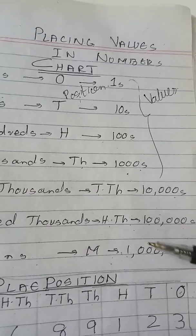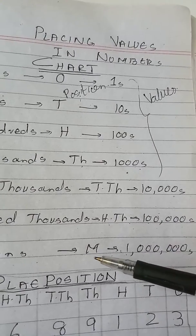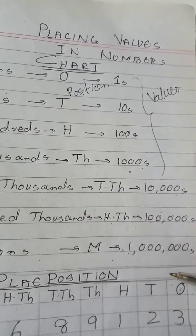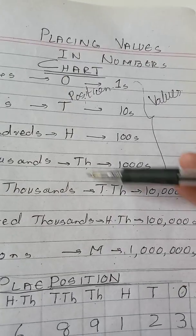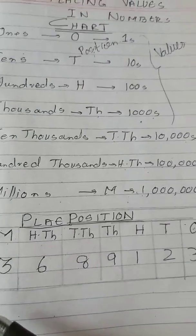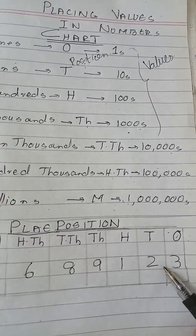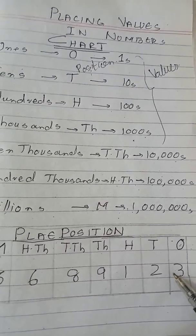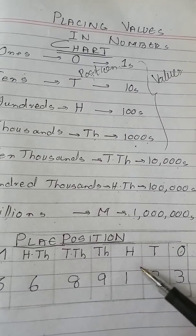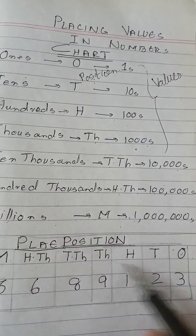So how many zeros do we have in hundred thousand? Five zeros. How many zeros do we have in million? Six zeros. Now how can we write these positions for any number? For example, we have this number: 3,689,123. You have to start writing the positions from right towards left.